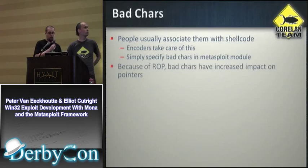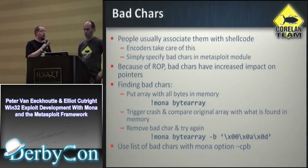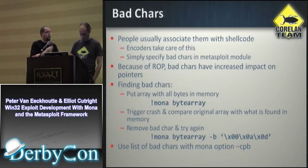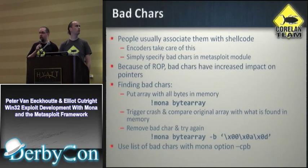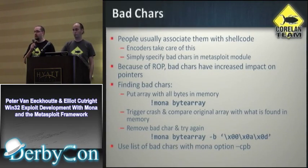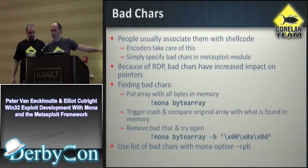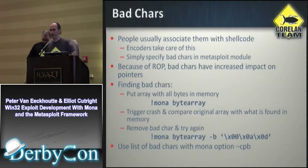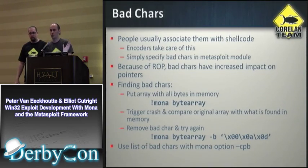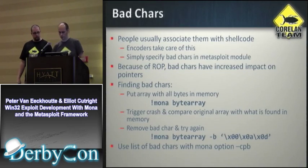Mona can also help you find bad characters. There's a video demo of this in the manual. It's important especially because of ROP. You can load a full byte array into memory, trigger the crash, and compare what was loaded in memory versus what you sent. It will start spitting out which bytes are bad characters and which got transformed into other characters. It used to be a really manual process and this has really sped things up. The reason we keep mentioning ROP is that in classical exploits you usually had just one pointer, so finding a pointer without bad characters was relatively easy. With ROP, a bigger part of our payload consists of pointers — so we need to filter gadgets to make sure they don't contain any bad characters.